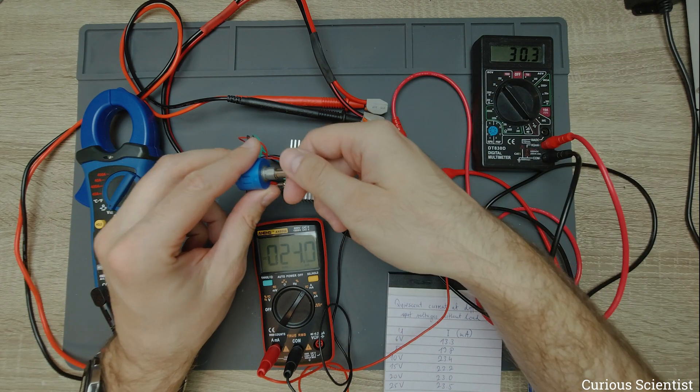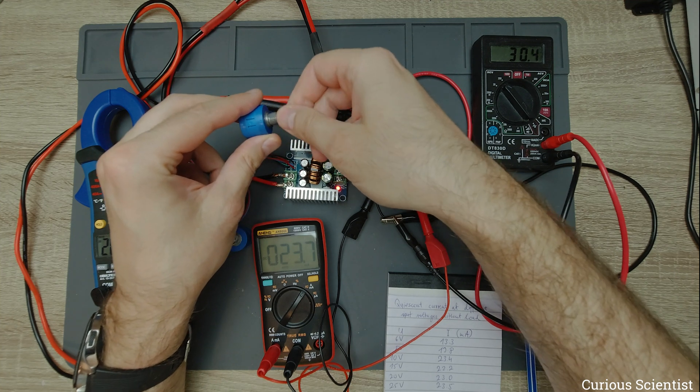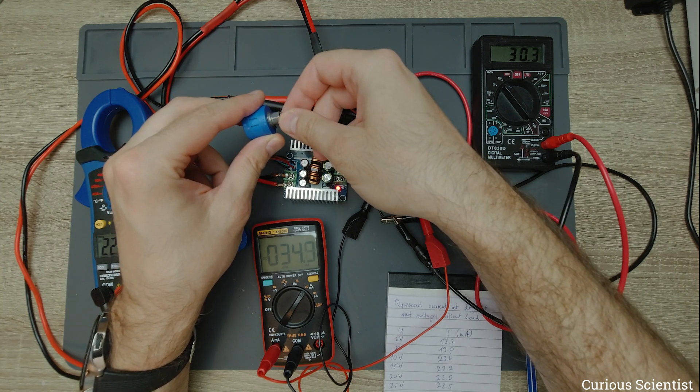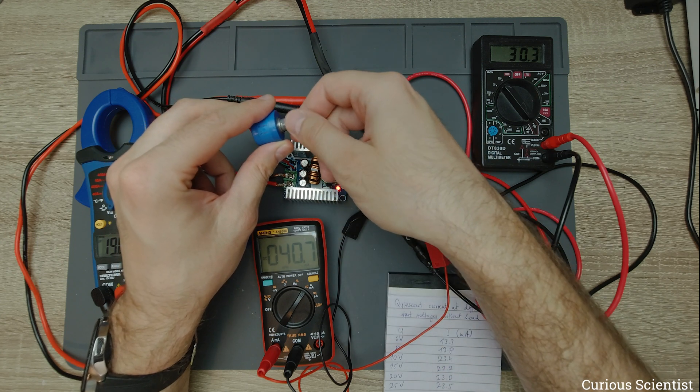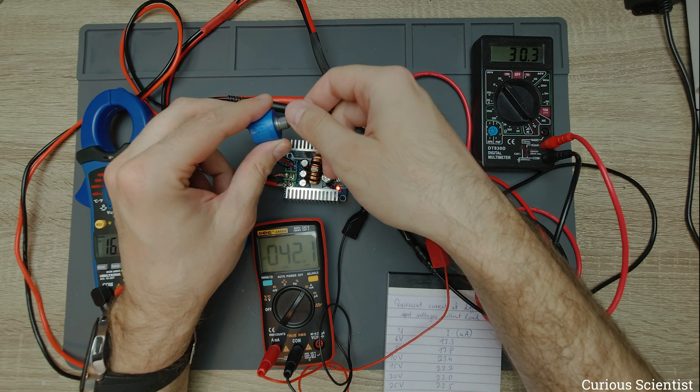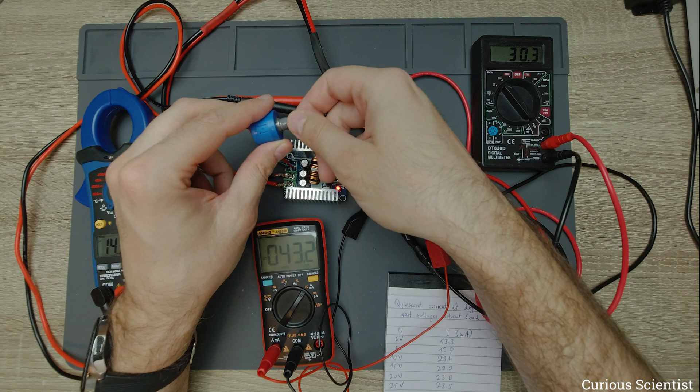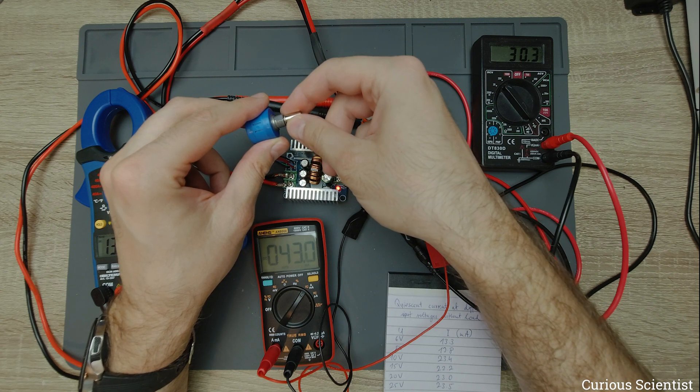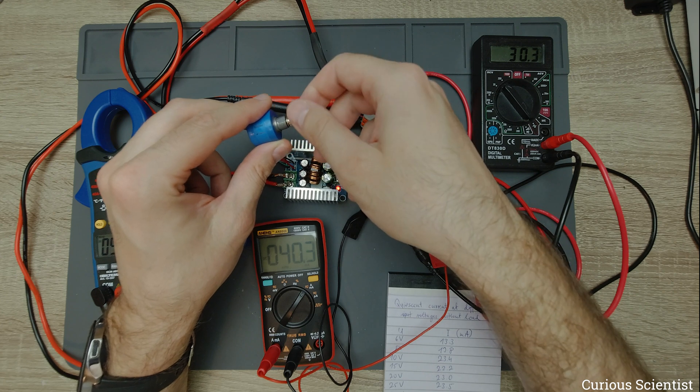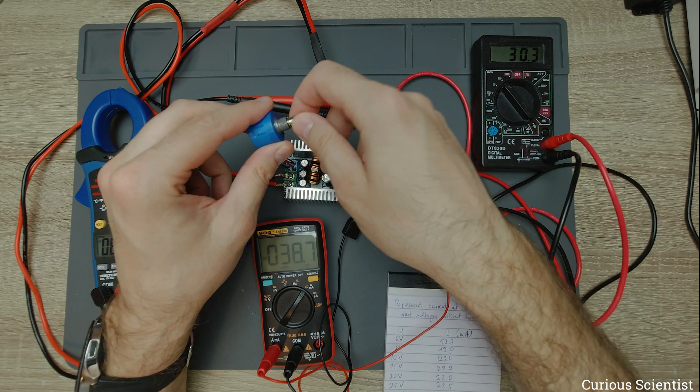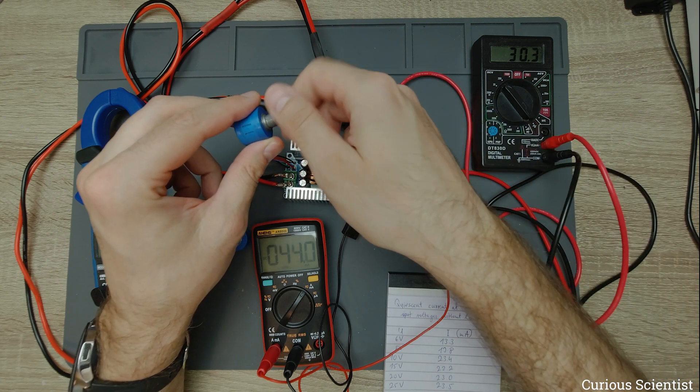Now we are at 24, and if I start to turn it and start to regulate the voltage, then the current goes up a little bit. So now we are at 43, so 19 milliamps additional current is drawn by the circuit. But that's all.